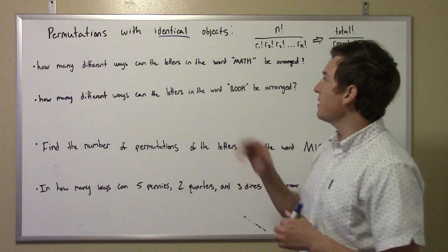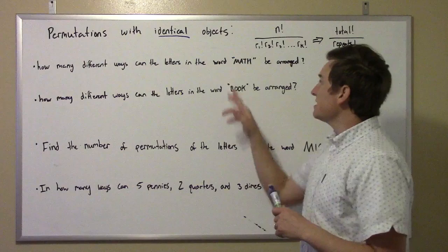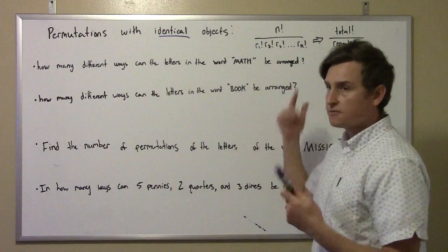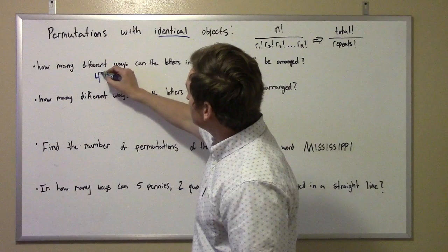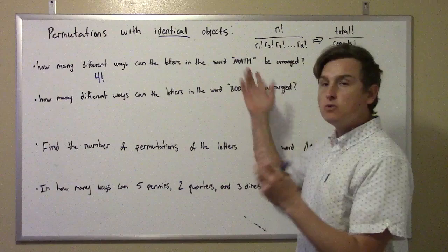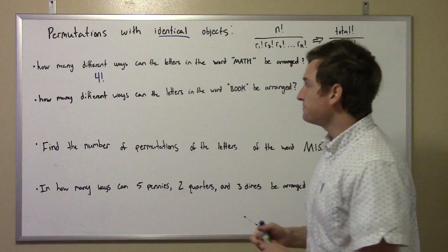It says: how many ways can the letters in the word MATH be rearranged? So there's four letters, and what you notice is that they're all different, all distinct letters. So there's four different letters. The idea here is you're just going to do basically four factorial. We're not choosing only two of them — we're not saying how many ways we're going to take two letters at a time. You're going to use all four letters.